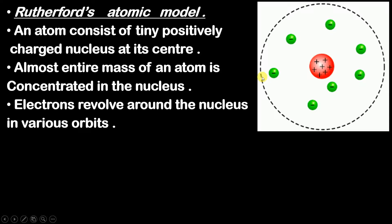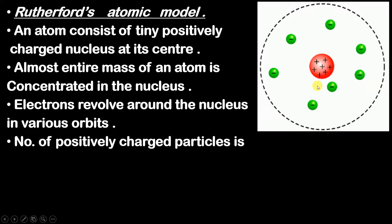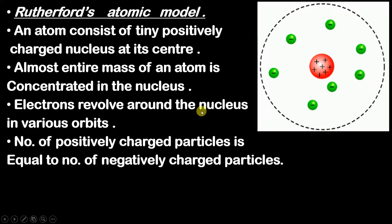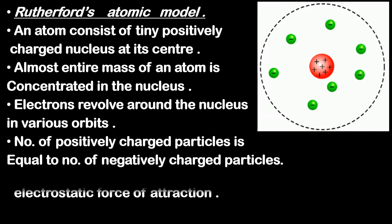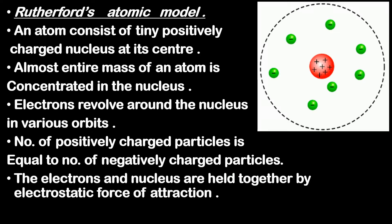Third point: electrons revolve around the nucleus in various orbits. Fourth: the number of positively charged particles in an atom is equal to the number of negatively charged particles — positive charge equals negative charge, and because of this an atom is stable. Fifth: the electrons and nucleus are held together by electrostatic force of attraction, which is responsible for holding the electrons and revolving them in orbit.